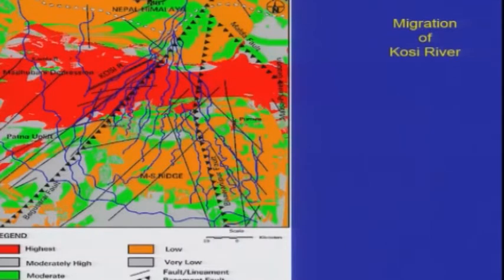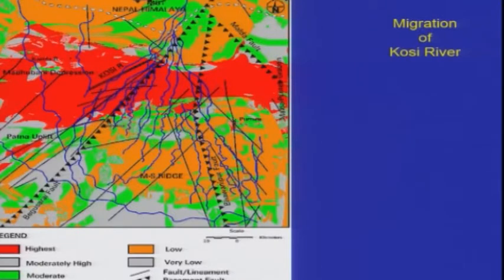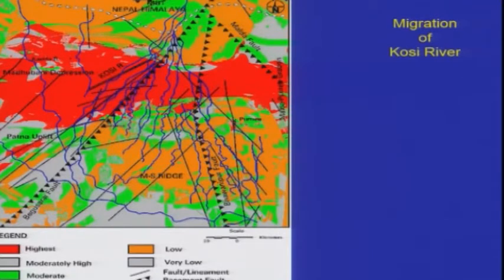Regarding the migration of the Kosi river, there are a few postulations and hypotheses given by researchers that the formation of this Kosi alluvial fan is controlled by ongoing tectonic deformation, where two basement faults are controlling the formation of this alluvial fan. This may be true, but there is no solid or concrete evidence to accept this hypothesis.